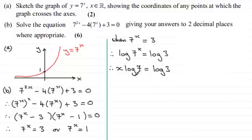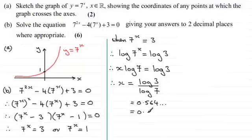And then we just divide both sides by the log of 7 to get x. So x would equal the log of 3 divided by the log of 7. And if you work this out on your calculator you should find you end up with 0.564 and so on. Which when rounded to two decimal places is equal to 0.56 to 2dp.